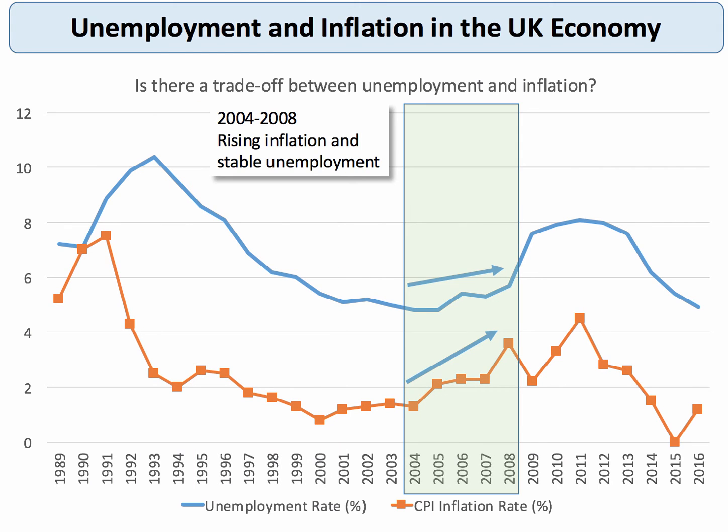Another interesting period is from 2004 through to 2008. This was a strong time for the British economy — there was a boom in real GDP. Unemployment had reached a low level of around 5% and was edging up slightly, but the rate of inflation was also accelerating. So you had a period of rising inflation and relatively stable unemployment.